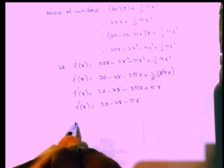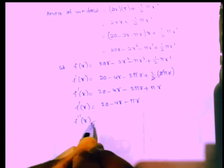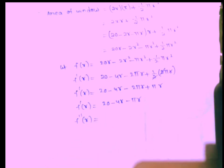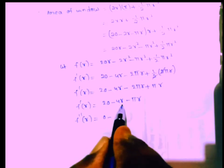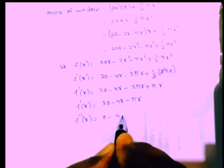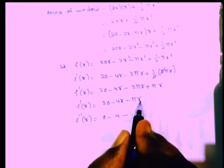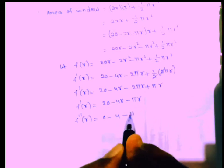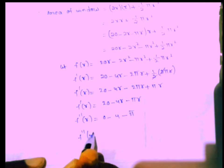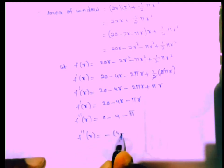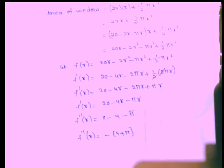Differentiating again on both sides with respect to R: F''(R) = 0 − 4 − π. So F''(R) = −(4 + π). Since (4 + π) is a positive constant, F''(R) is negative, confirming a maximum.